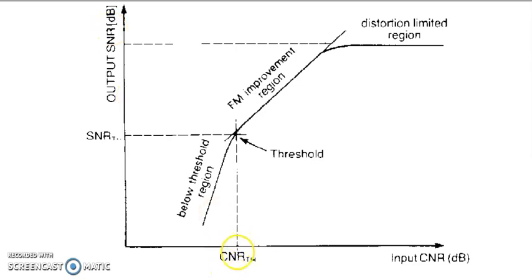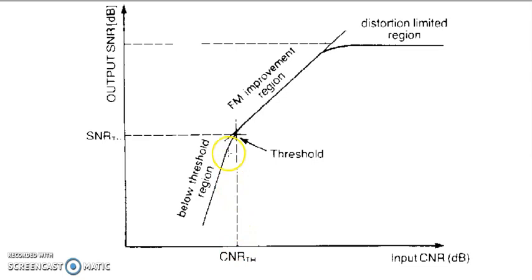In the graph, below the threshold point the relationship is linear — as the carrier-to-noise ratio rises, the signal-to-noise ratio rises correspondingly. However, at approximately 10 dB carrier-to-noise ratio, the graph distorts and the linear slope changes drastically. After that point, in the distortion-limited region, we are no longer able to recover the signal; only suppressed, noise-dominated output remains.